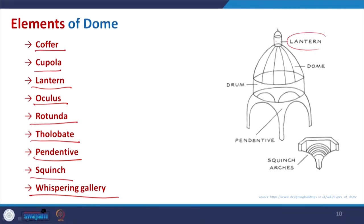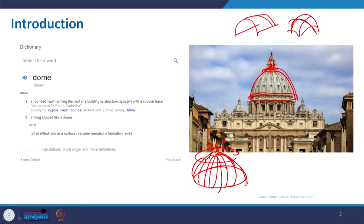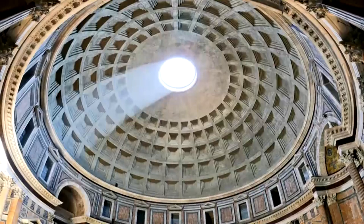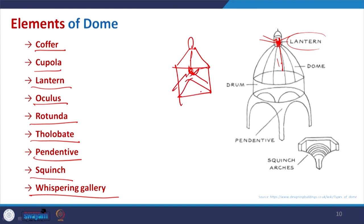Before that, very simply: the lantern is the upper part — similar to the initial picture shown at the beginning. This portion is referred to as the lantern, and not only in shape but in function as well. It is used to create a puncture so light can enter and the interior can receive daylight — like holding a lantern with a lamp inside to get light.